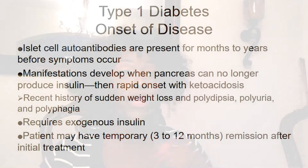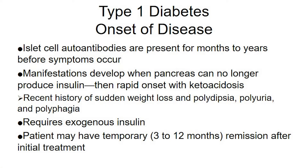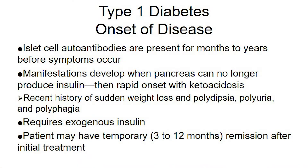Type 2 patients are more likely to go into HHNKS. For Type 1, recent history includes sudden weight loss, polydipsia, polyuria, and polyphagia. They require an exogenous source of insulin — meaning from the outside — because Type 1 diabetics are not producing insulin or not producing nearly enough to keep them alive. The patient may also have a temporary 3 to 12 month remission after initial treatment.